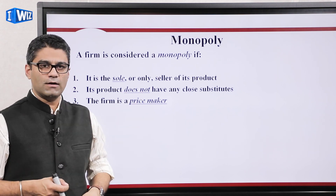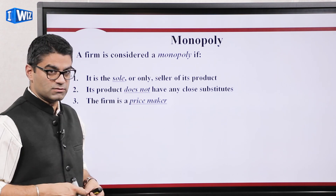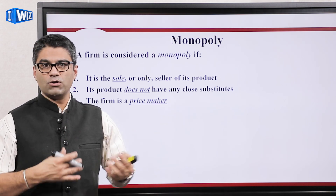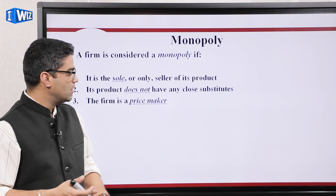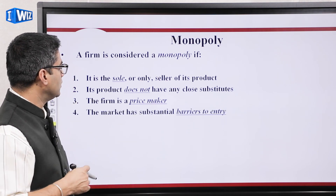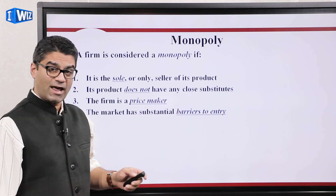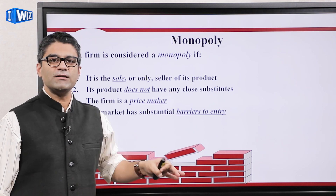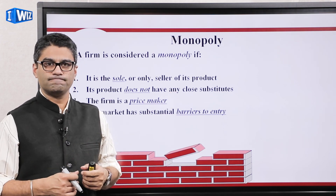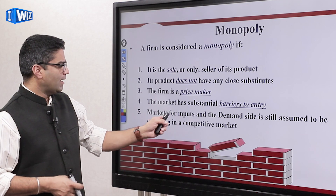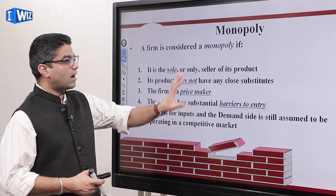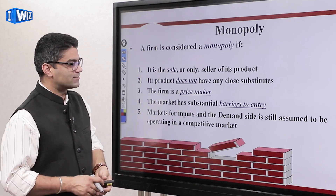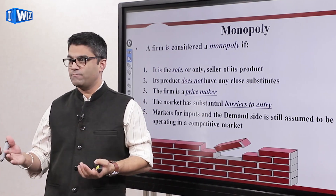In a little bit we'll see that monopolists are going to be price makers, which means they can choose what price to charge. That doesn't mean they'll charge as much as they want, because the demand curve in the market is still downward sloping. But they have some degree of being able to choose their price. They'll also have substantial barriers to entry. We're still going to assume that the demand side is perfectly competitive — there are still many buyers — and the inputs the monopolist buys are still produced in a competitive market.